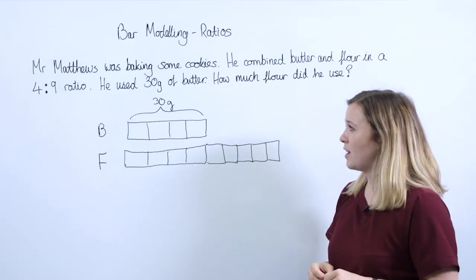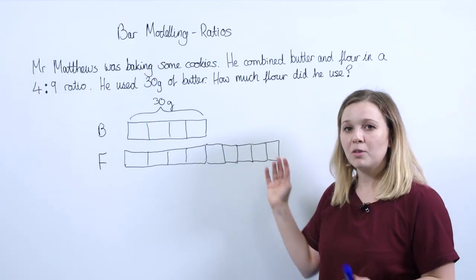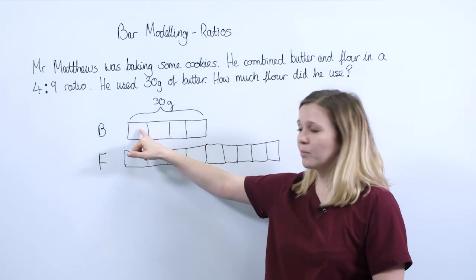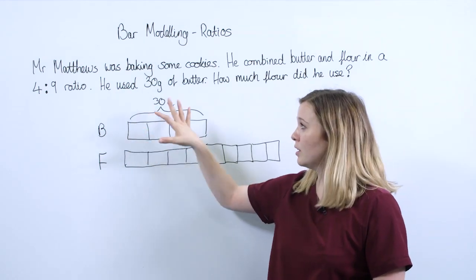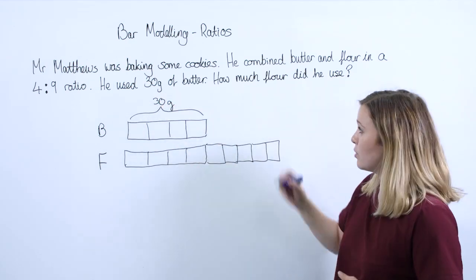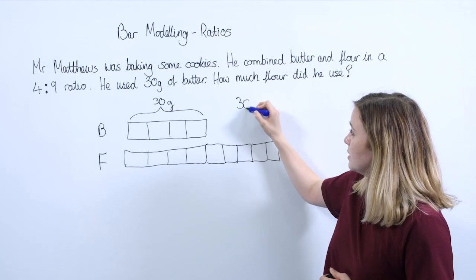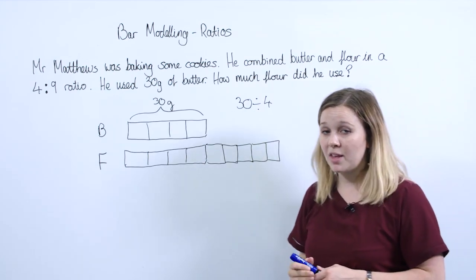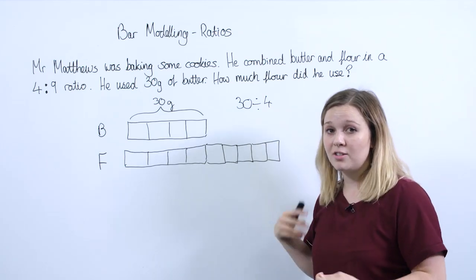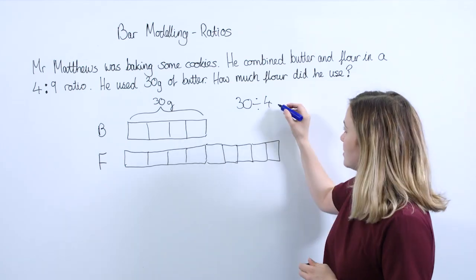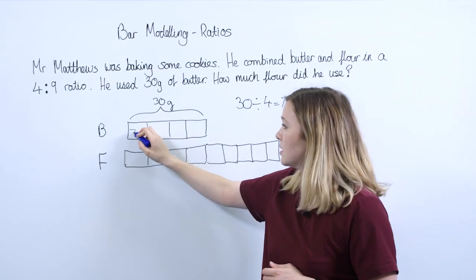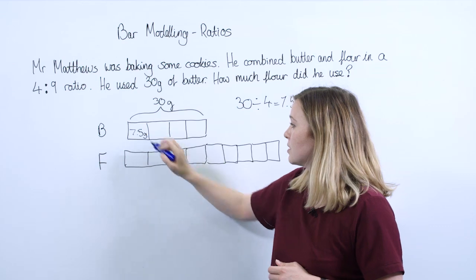The question asked us how much flour he used. Because these parts are all equal, we can find the value of one part quite simply by dividing 30 by 4. Pupils can choose whatever method they want — they might do it quickly in their head: 30 divided by 2 is 15, half of that is 7.5. So each of these boxes is 7.5 grams.